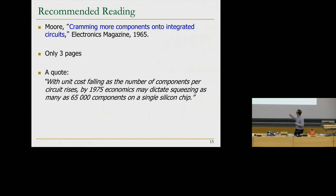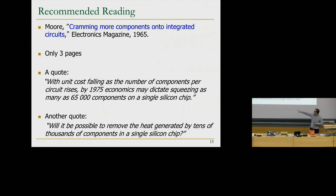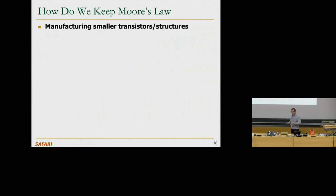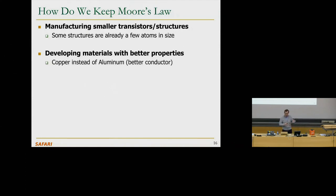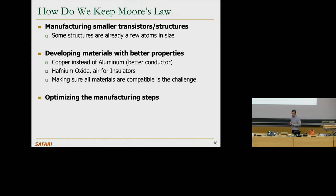I recommend reading Moore's seminal paper — it's only three pages. He says that by 1975, economics may enable squeezing as many as 65,000 components on a single silicon chip. Today we're at 20 billion. There's also a visionary quote: 'Will it be possible to remove the heat generated by tens of thousands of components in a single silicon chip?' — and this is exactly where we are today. To maintain Moore's Law: we want to manufacture small transistors, develop materials with better properties, develop lower-power transistors, and optimize manufacturing steps.